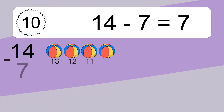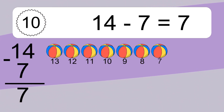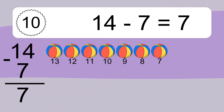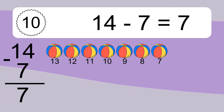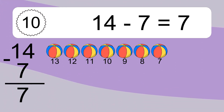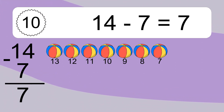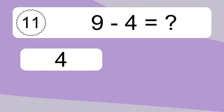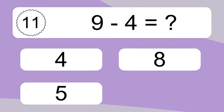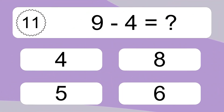14 minus 7 equals what? 14 minus 7 equals 7. Let's count it! 13, 12, 11, 10, 9, 8, 7.